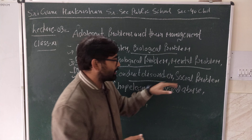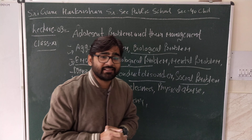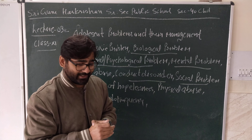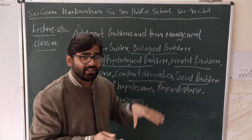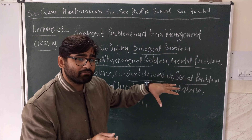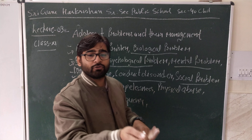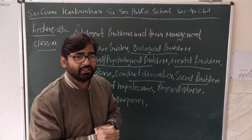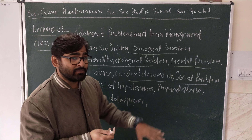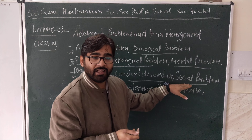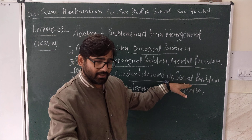Next, we discuss social problems. Every adolescent desires to achieve a social status, but their position and image are hard to establish and do not remain constant. As a result, they have difficulty coordinating with others, and cannot adjust themselves even with their own family members, leading to social problems.